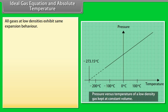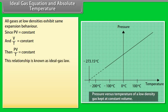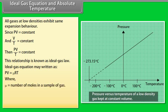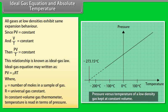Ideal gas equation and absolute temperature: All gases at low densities exhibit the same expansion behavior. Since PV = constant and V/T = constant, then PV/T is also constant. This relationship is known as the ideal gas law. The ideal gas equation may be written as PV = μRT, where μ is the number of moles in a sample of gas and R is the universal gas constant.